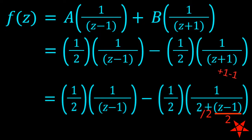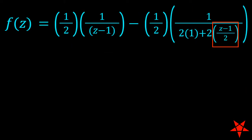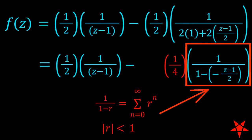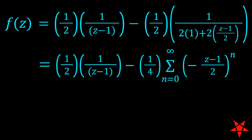If we factor out a 2, we now have z minus 1 over 2 on the right. From here, we can factor out a minus sign from the z minus 1 over 2 term, and we now have minus 1 over 4 times a geometric series that is based upon negative z minus 1 over 2.